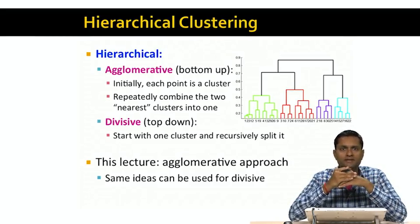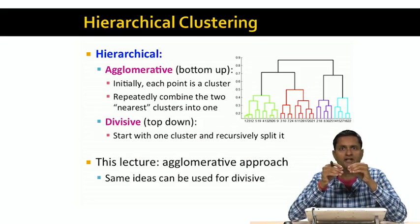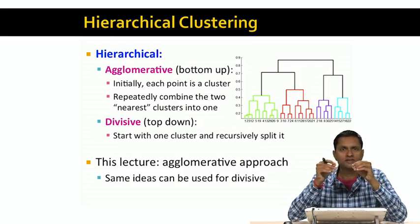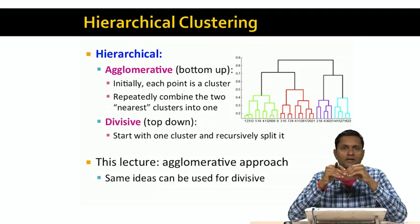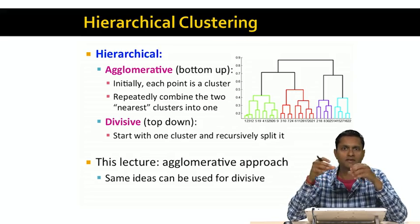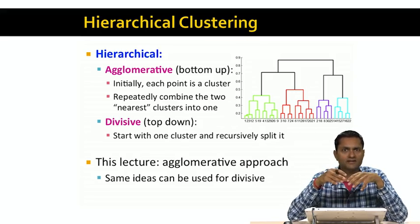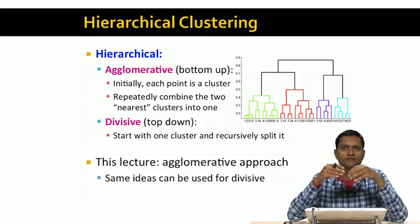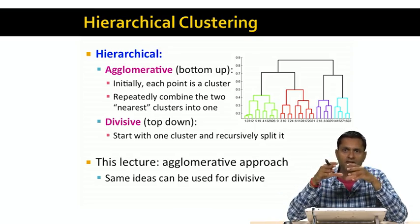In bottom-up methods, each data point is initially in a cluster of its own. At each step, we find the two closest clusters and combine them into a single cluster. In divisive methods, all the data points are in a single cluster to begin with, and we recursively split the cluster as we go along. In this lecture, we're going to focus on the agglomerative or bottom-up approach, where we start with each data point as its own cluster and then combine clusters.